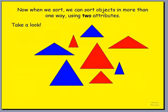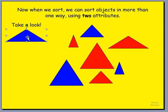Let's have a look at another slide. Now when we sort, we can sort objects in more than one way, using two attributes. Let's have a look at the triangles here in front of us. We have blue triangles and we have red triangles. What different ways can we sort these triangles? I'm going to move this blue triangle right over here. What else can we do? What would you do next?